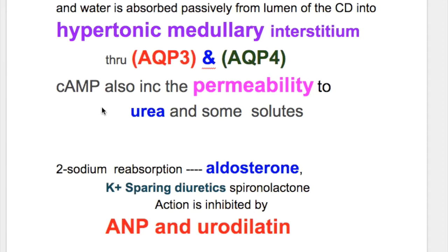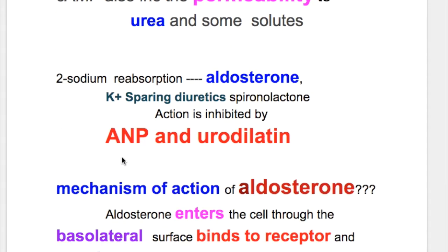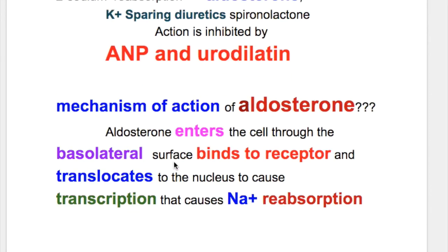Cyclic AMP also increases the permeability to urea and some solutes. The second function of the principal cells is sodium reabsorption, done by aldosterone. Potassium-sparing diuretics like spironolactone also act on the principal cell, and this action is inhibited by atrial natriuretic peptide and urodilatin.